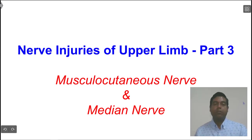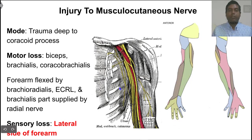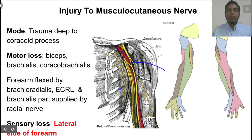In this video on nerve injuries of the upper limb, we will discuss injuries to the musculocutaneous nerve and the median nerve. The musculocutaneous nerve is a branch from the lateral cord — you can see the lateral cord here — and this branch is the musculocutaneous nerve, supplying the coracobrachialis, biceps, and brachialis muscles.